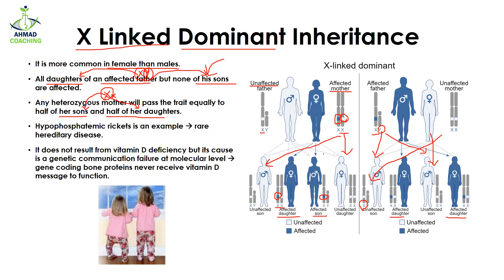There are some diseases linked with X-linked dominant inheritance. Hypophosphatemic rickets is an example of a rare hereditary disease. It is not a result of vitamin D deficiency, but is caused by a genetic communication failure at a molecular level. The gene coding for bone protein never receives the vitamin D message to function, so the bones are not properly formed — they are deformed — and rickets develops.